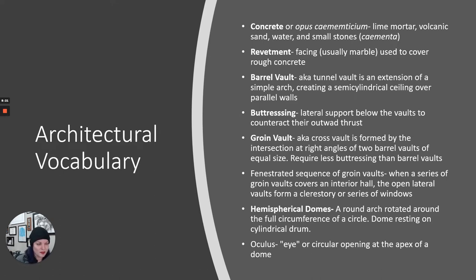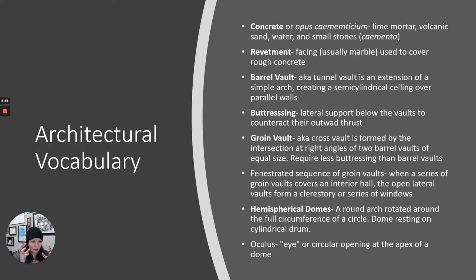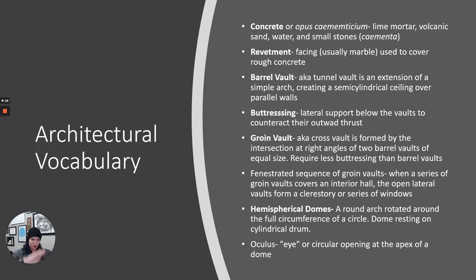Concrete in Roman times is called opus semimeticium, which is made out of lime mortar, volcanic sand and ash, water, and small stones called caminta. They figured out they could make great structures with concrete — it's very flexible as a material, you can mold it however you want, and it's strong. But maybe they weren't super crazy about the way it looks, so there are developments like revetments — a facing used to cover rough concrete — such as a thin veneer of marble or stucco and plaster applied to smooth it out.